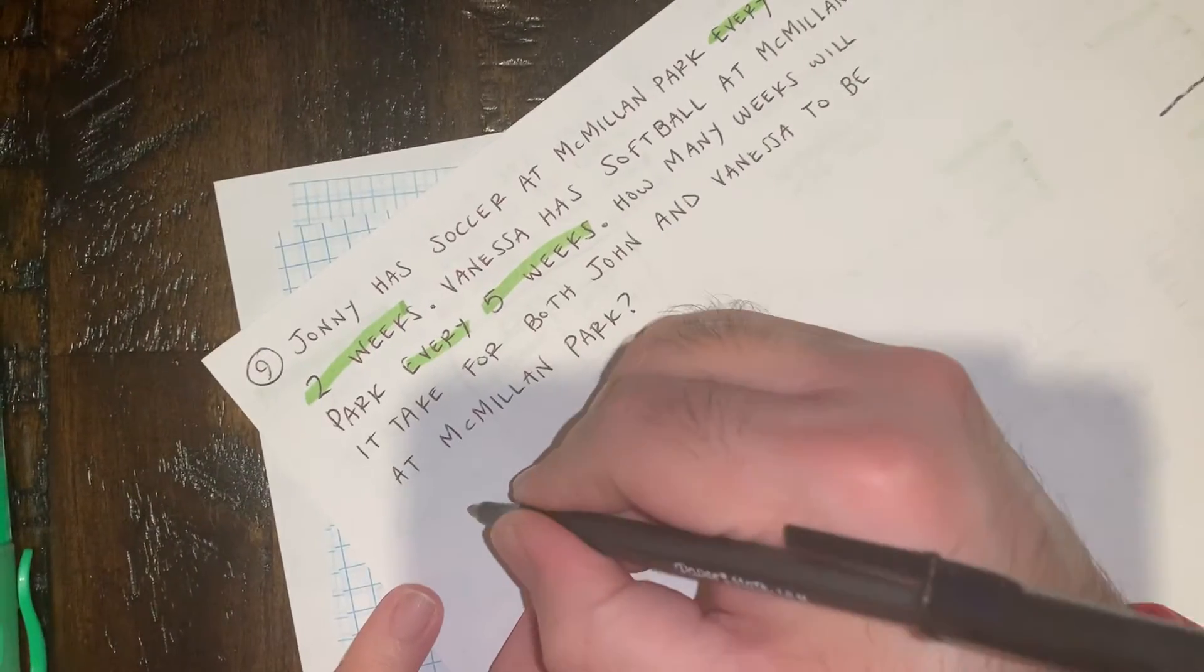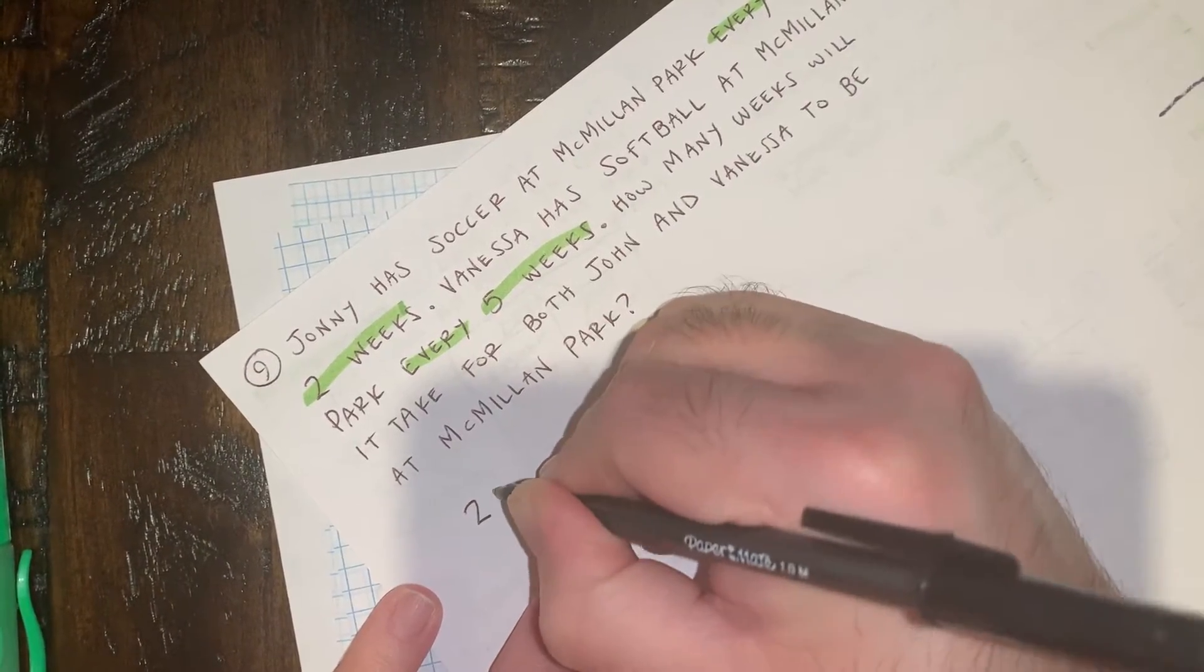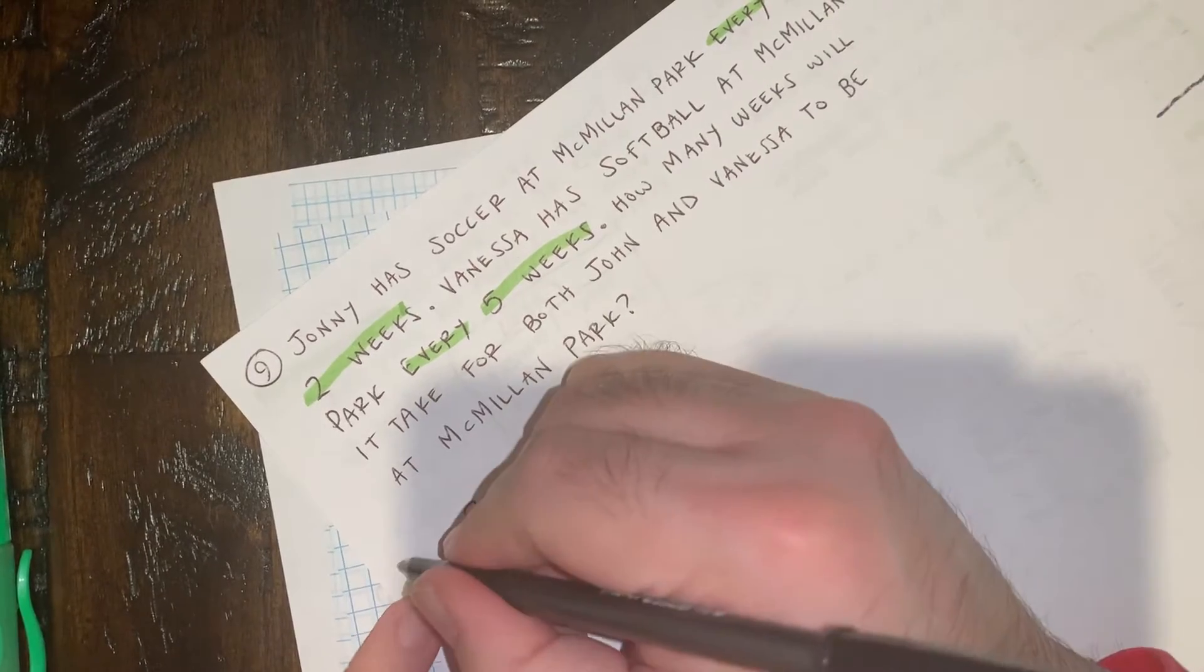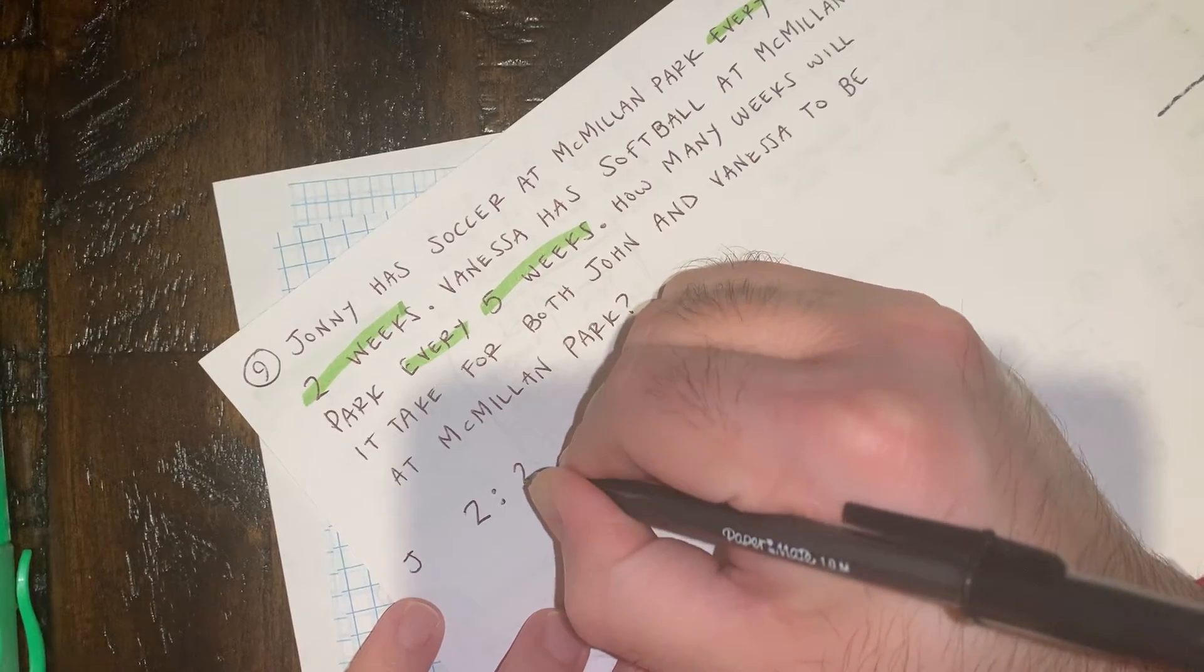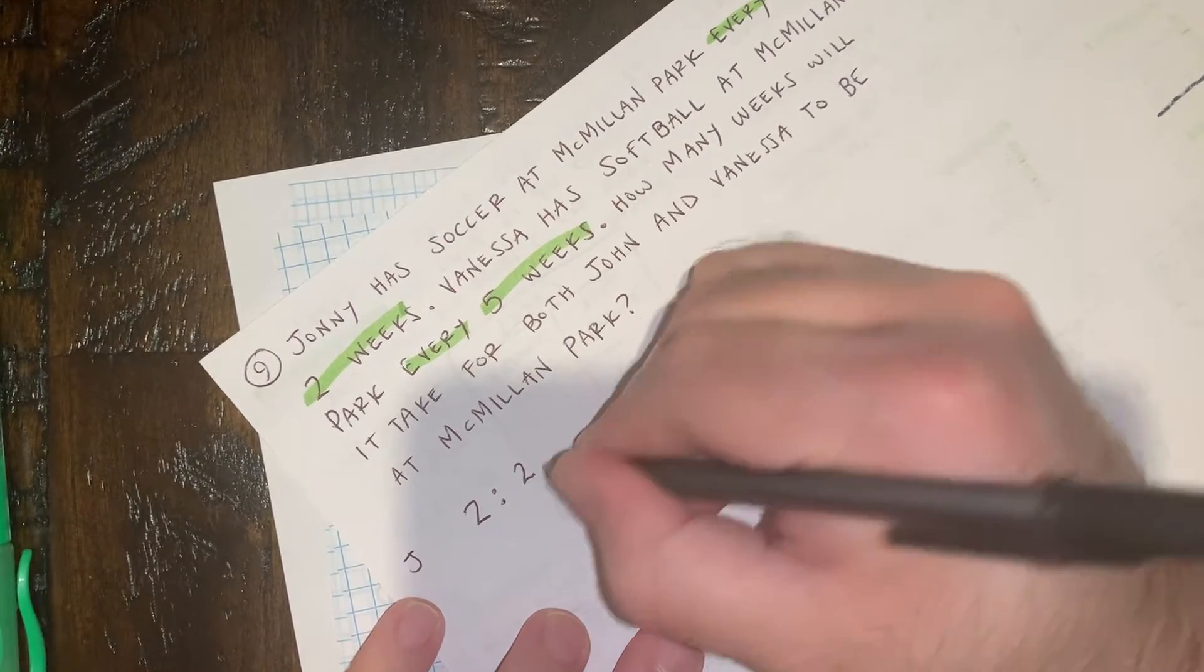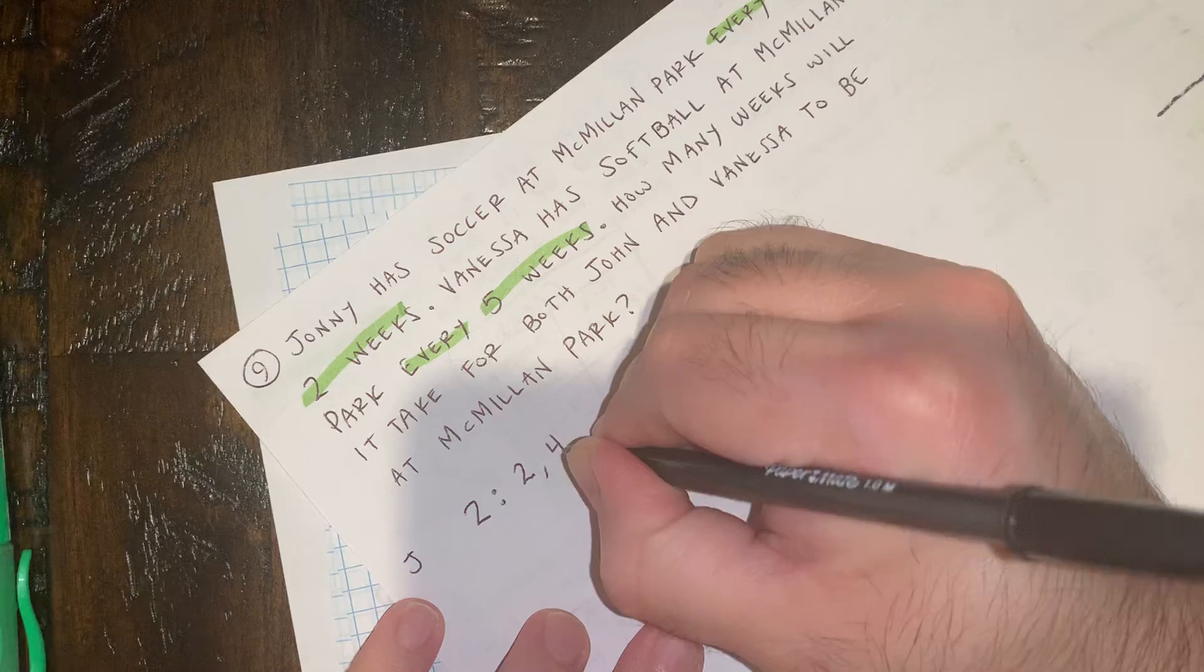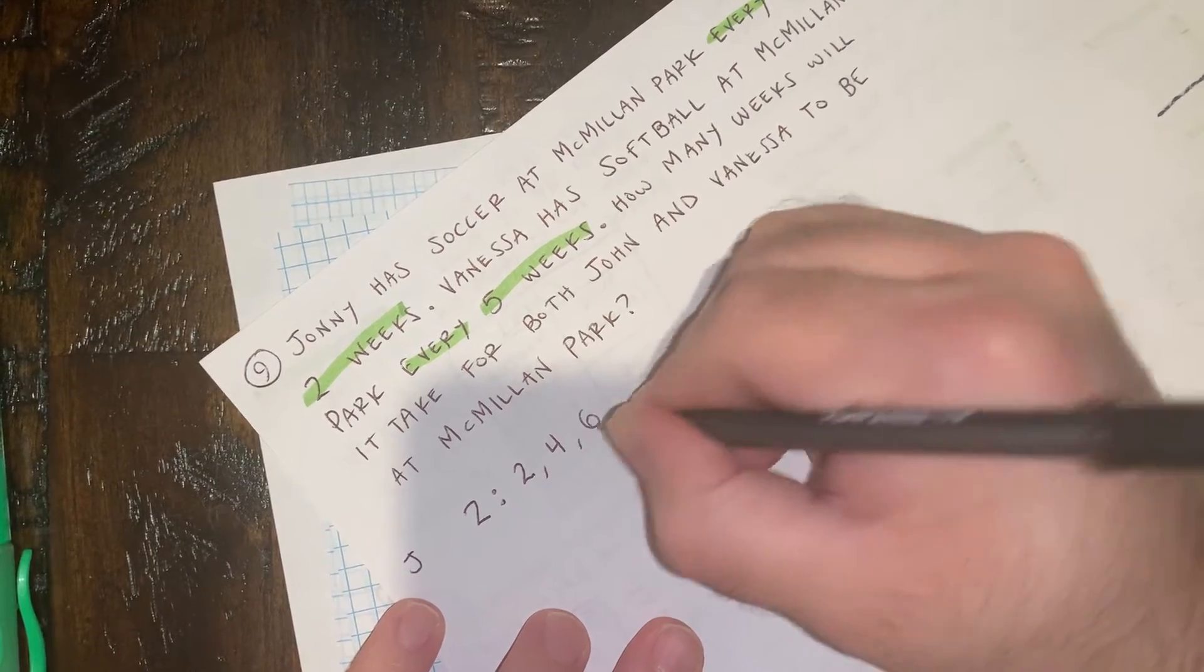We're gonna count by twos for Johnny. I'm gonna put a J for Johnny. So Johnny is at Macmillan Park every two weeks. So in two weeks, he's at Macmillan. In four weeks, he's at Macmillan. In six weeks, he's at Macmillan.